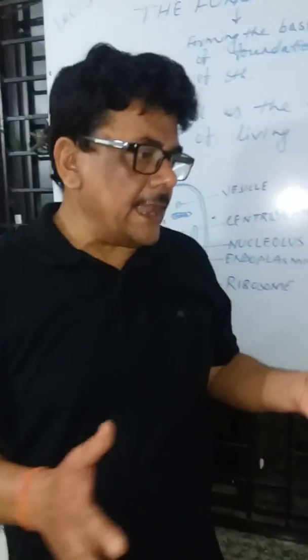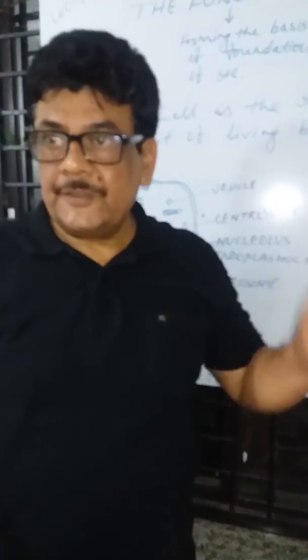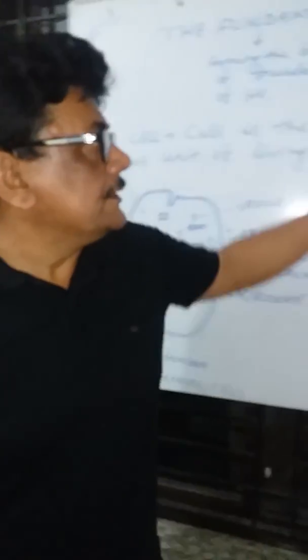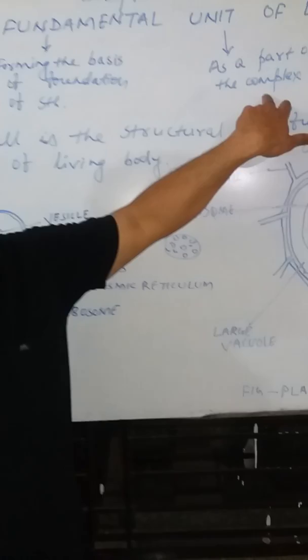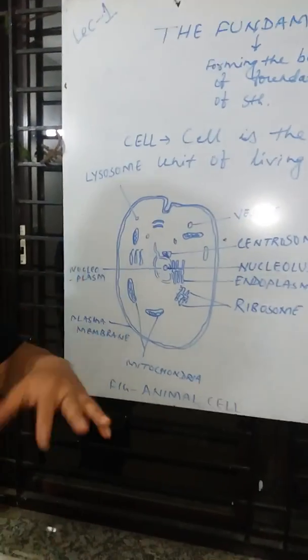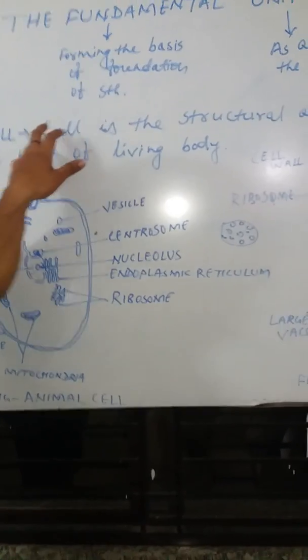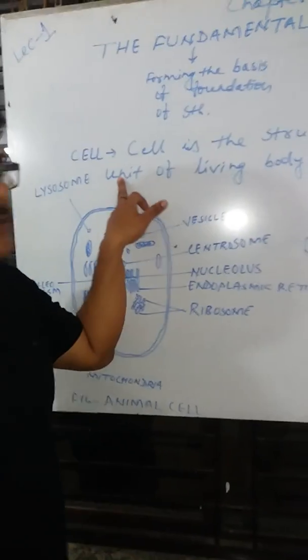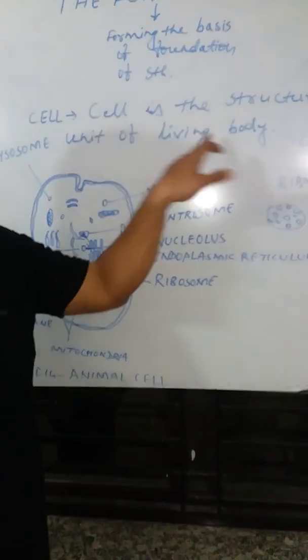Similarly, in the living body, the cell is the fundamental unit or basic unit of the body. Just as a book has 20 units — one unit, two units, three units — we have one cell, two cells, millions of cells. So the cell is a unit structure. The simple definition of a cell: a cell is the structural and functional unit of a living body.